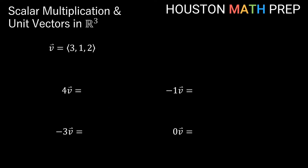Let's do a few quick examples. For 4 times vector v, we multiply each component by 4, giving us the vector 12, 4, 8 — pointing in the same direction as v but 4 times as long. For negative 1 times vector v, distributing multiplication by negative 1 gives us negative 3, negative 1, negative 2.